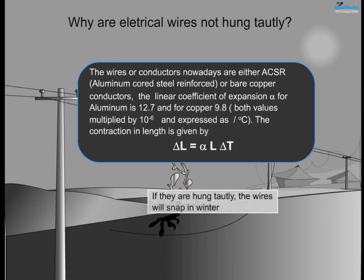Wires and conductors nowadays are either ACSR (aluminum-cored steel reinforced) or bare copper conductors. The linear coefficient of expansion, alpha, for aluminum is 12.7 × 10⁻⁶ /°C and for copper is 9.8 × 10⁻⁶ /°C. The contraction in length is given by ΔL = α × L × ΔT.